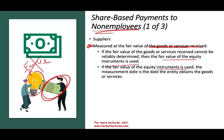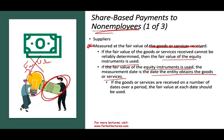If the goods or services are received on multiple dates over a period — say January 15th, February 3rd, February 15th — then for each date we figure out the fair value of the instrument on that specific date. So it's pretty straightforward: for each delivery date, use the fair value of the instrument on that date. Under US GAAP, we always start with the fair value of the instrument. If we're giving equity, the value of the transaction is always the value of our equity first, and only if unknown do we look at the other party.